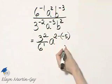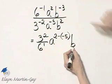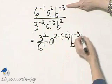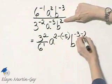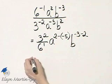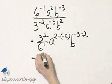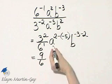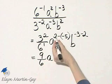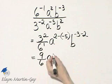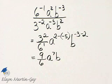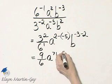And then notice I have some other common bases. This is b raised to a power of numerator exponent minus denominator exponent. Let's see what we have. 3 squared is 9, and 6 to the 1 is 6. This a is to a power of 2 minus negative 5, so that's 2 plus 5, or 7. And then b is to a power of negative 3 minus 2, and that is negative 5.